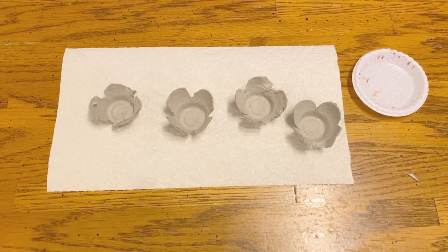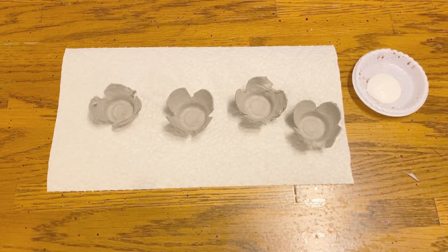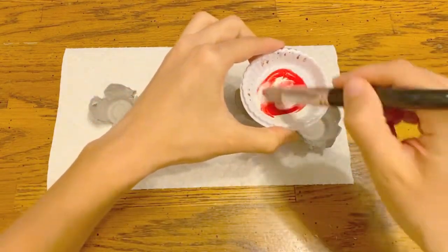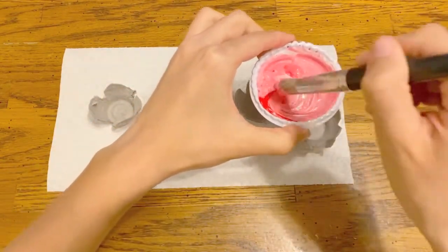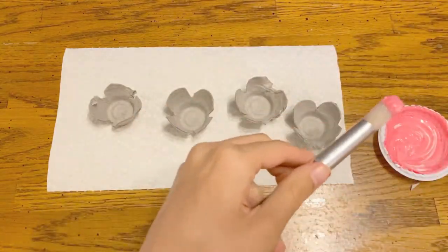Step two is to paint your blossoms. We want a pink color. White and what color make pink? Red. We want a light pink, so use more white paint than red. This is a little bit dark for me still, so I'm just gonna add a little bit more white paint.